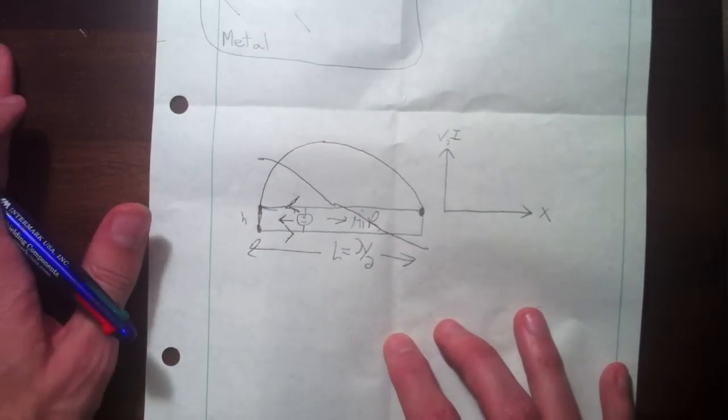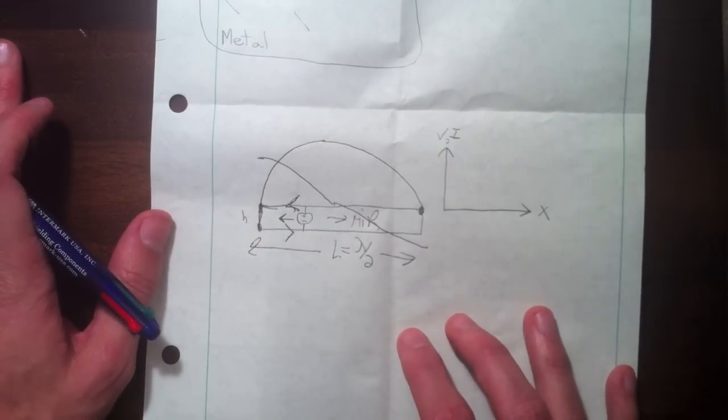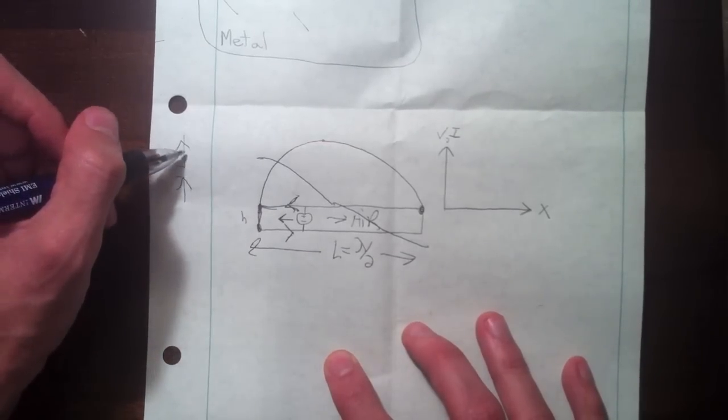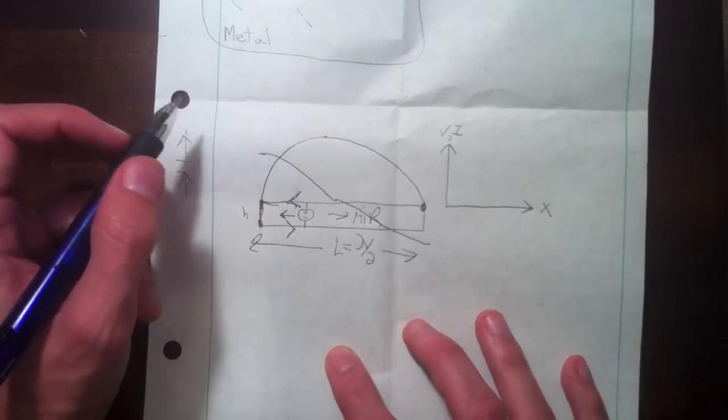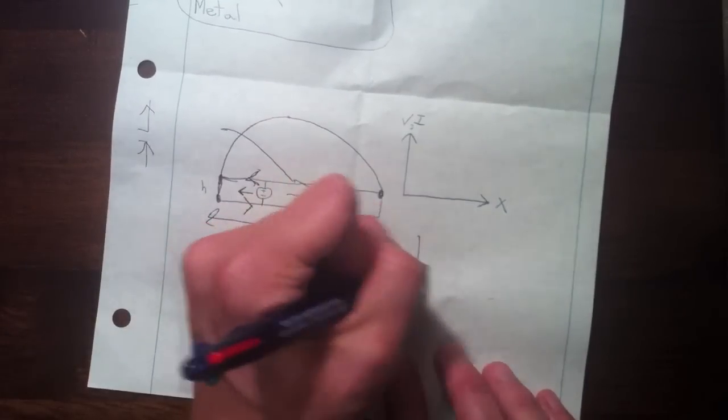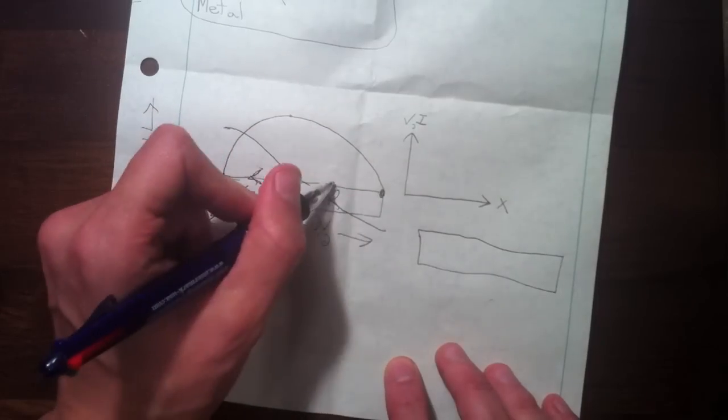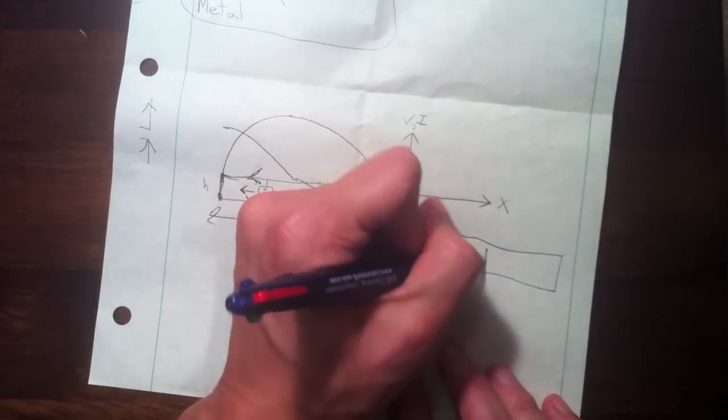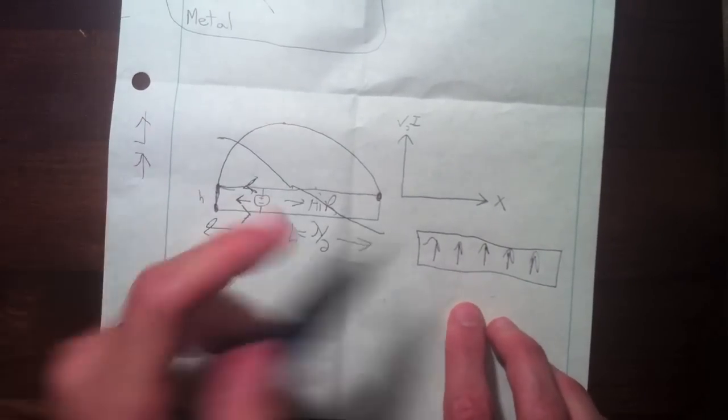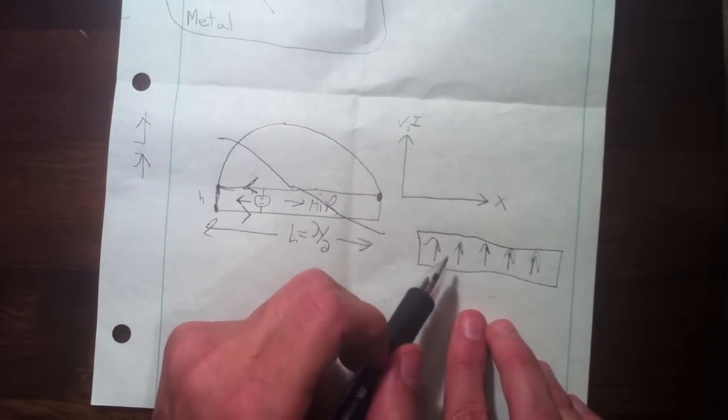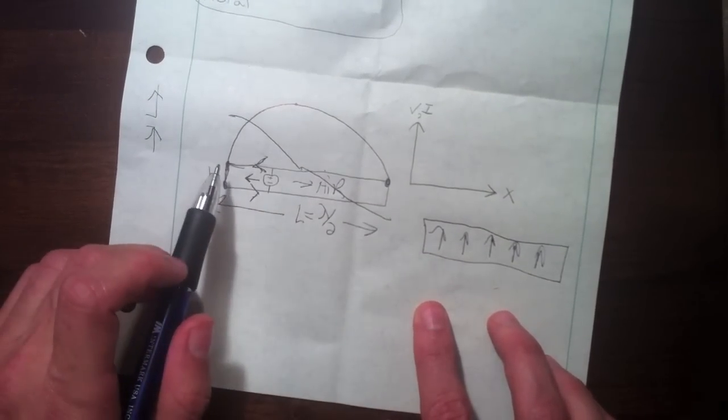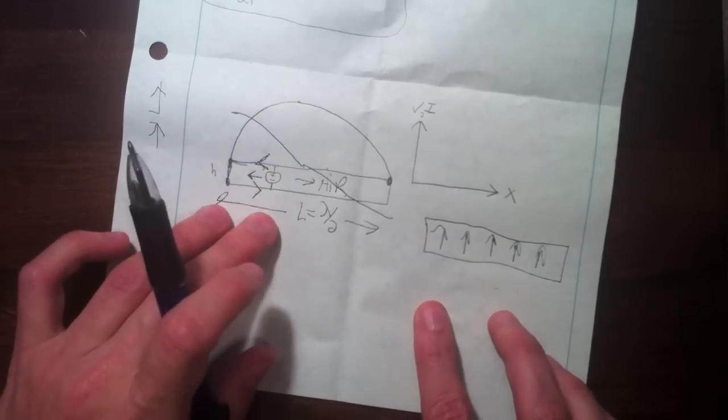For an antenna to radiate, we either need the current to add up in phase or the voltage to add up in phase. For a dipole antenna, it's the current adding up in phase that causes radiation. Here we have current going one way and then canceling out with current going the other way right next to it. The current is not giving rise to radiation, but rather the voltage distribution from top to bottom. We always have the voltage going this way with an associated E field, and it's this E field due to the voltage adding up in phase that gives rise to radiation.